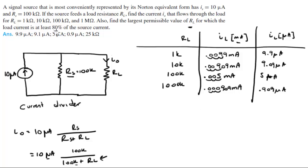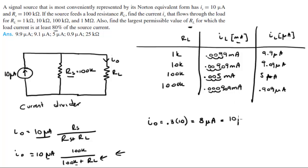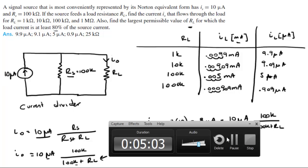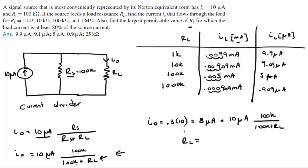They want you to find the resistance that will give you at least 80 percent of the source current. So you rewrite the formula: IO must equal 80 percent of the original current, which is 0.8 times 10 pA, and RS is 100k over RS plus RL equals that value. When you solve for RL, you get RL equals 25 kilohms, since the units cancel leaving kilohms.